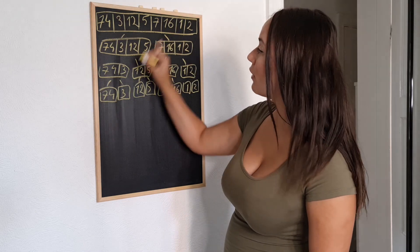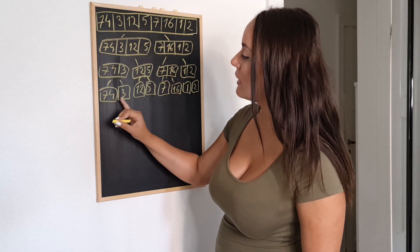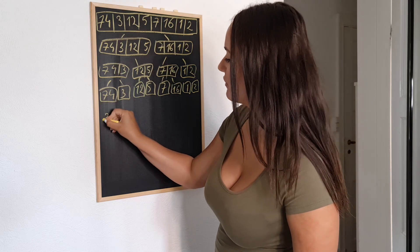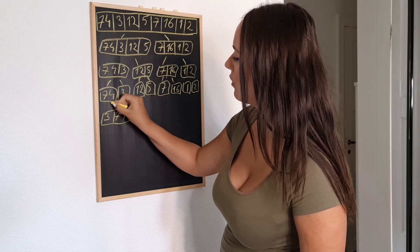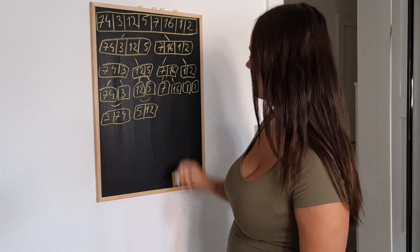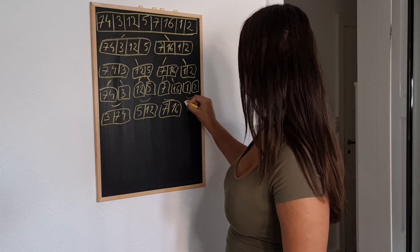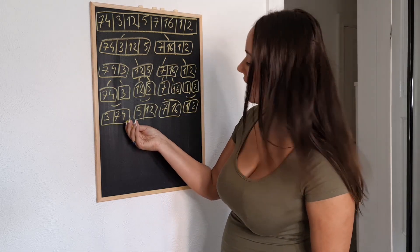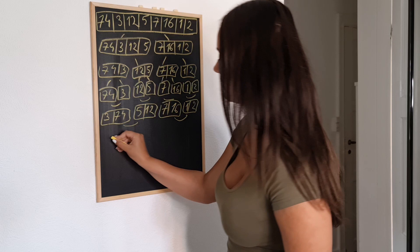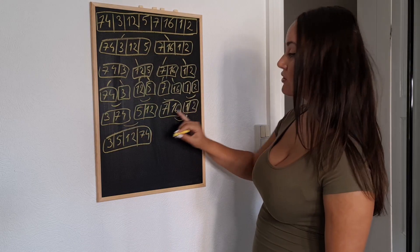Now we have split our entire array into individual elements. What we're going to do is compare these pairs and put each element in its right sorted place. We compare 74 with 3 and get 3 and 74, because 3 is smaller. Then 12 and 5 — we swap them to get 5 and 12. Then 7 and 16 stay the same. And 1 and 10 stay the same because 1 is smaller. Now looking at the next bigger pairs, we get 3, 5, 12, 74, and 1, 2, 7, and 16.